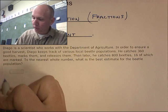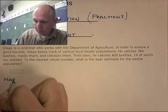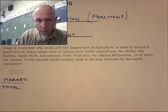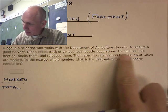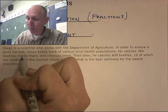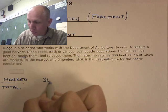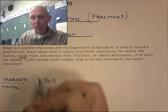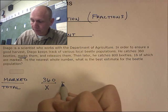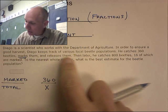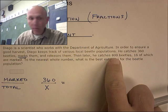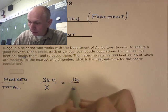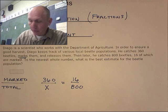Well, here's how we're going to set up. We're going to set up marked over total. So, initially, he goes out and he catches 360 and marks them. So, we have 360 marked beetles over how many total beetles? Well, that's the unknown. We don't know how many beetles are out there. Then he comes back later and he's going to catch them. He catches how many beetles? 800 and 16 of them are marked. 16 marked out of 800 total.